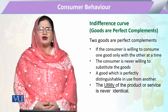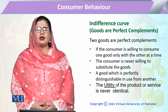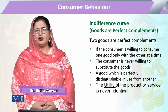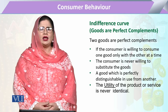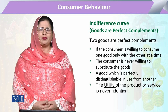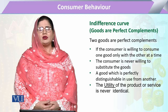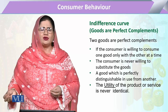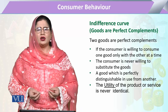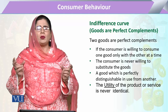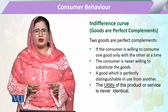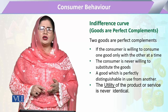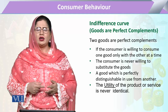We are going to study what will be the shape of the indifference curve if the consumer is having a bundle of goods which are complement to each other. Two commodities will be complement to each other if both commodities are quite distinguishable. One commodity has different utility compared to the other, but the consumer always utilizes them in a particular proportion and in a particular combination, and that proportion remains constant throughout their utilization.